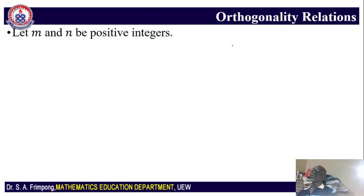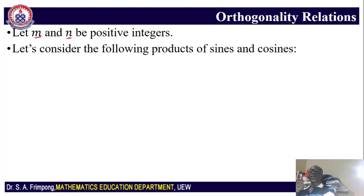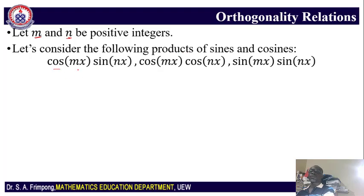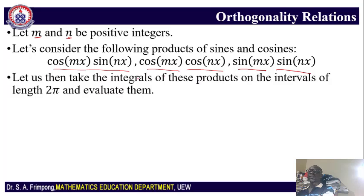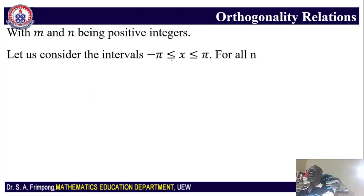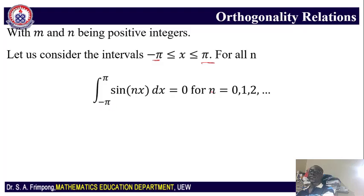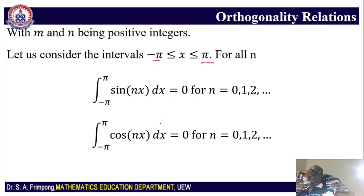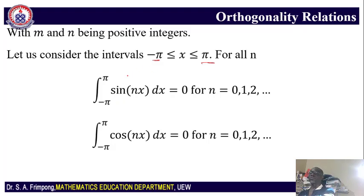Now let's look at orthogonality relations. Let m and n be positive integers. Consider the following products of sine and cosine: cos(mx)sin(nx), cos(mx)cos(nx), and sin(mx)sin(nx). We take the integral of these products over an interval of length 2π, specifically from negative π to π. For all n, we know that the integral from negative π to π of sin(nx) is 0, and the integral from negative π to π of cos(nx) is also 0. We will prove this shortly.